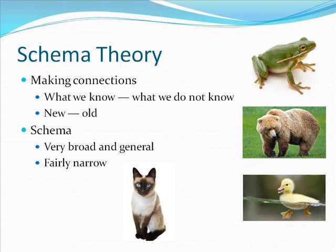A schema may be very broad and general — for example, a schema for animals — or it may be fairly narrow — for example, a schema for Siamese cats. Some view comprehension as primarily involving activating or constructing a schema that accounts for the elements in a text, similar to constructing an outline of a script.